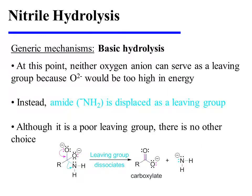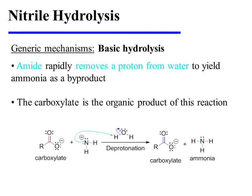Both hydroxyl groups lose a proton in the process. At this point, neither oxygen anion can serve as a leaving group, because oxygen with a doubly negative charge would simply be too high in energy. Instead, amide is displaced as a leaving group — although it is a poor leaving group, there is no other choice. Amide then rapidly removes a proton from water to yield ammonia as a byproduct, but it is the carboxylate that is the organic product of interest.